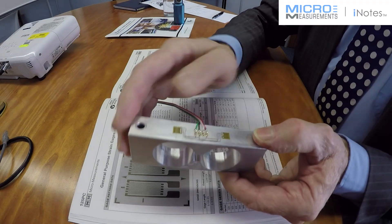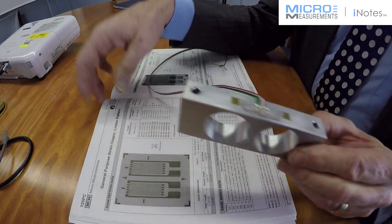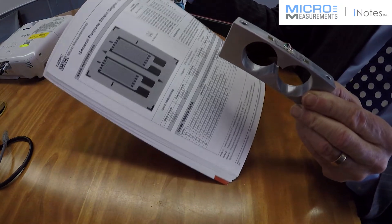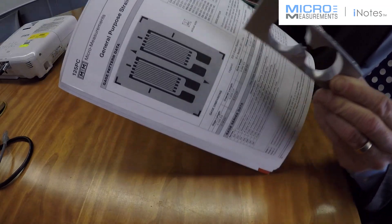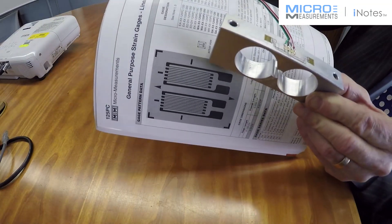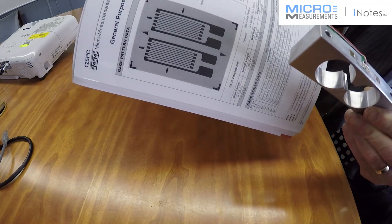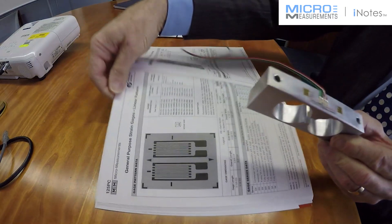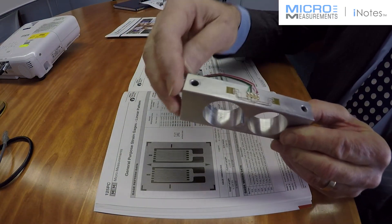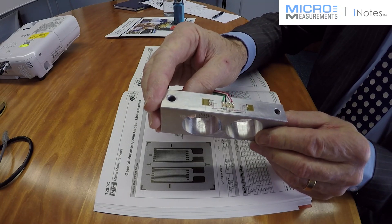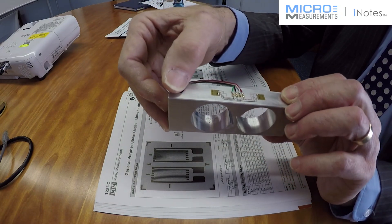The actual strain gauges here are in fact shown here on the catalog, which is a 125 PC strain gauge. I don't know if that's clear there but that's the actual size of the gauge here. This just blows it up so you can see what is actually happening here. And that is the two gauges that were used here to create the full Wheatstone bridge for this bending binocular cell.